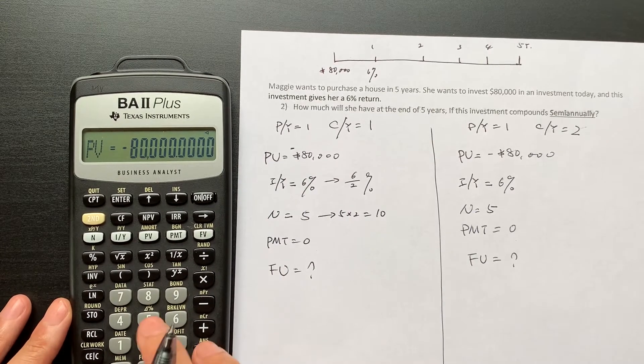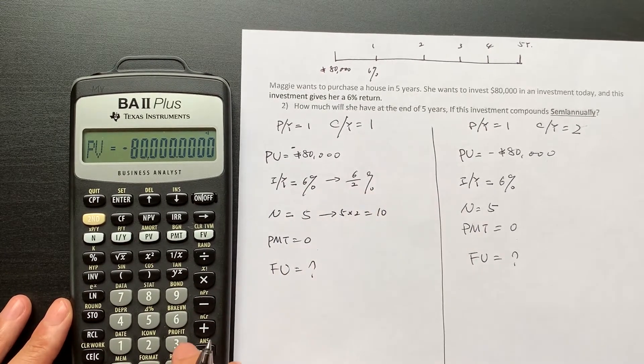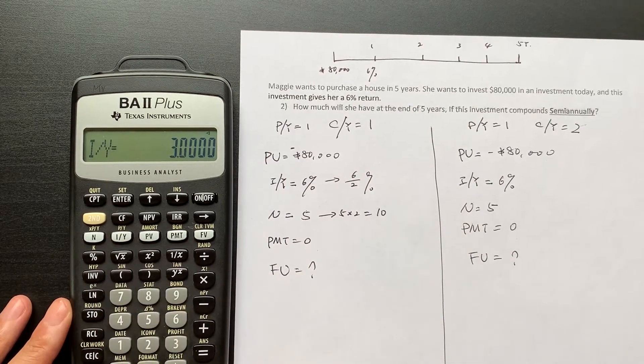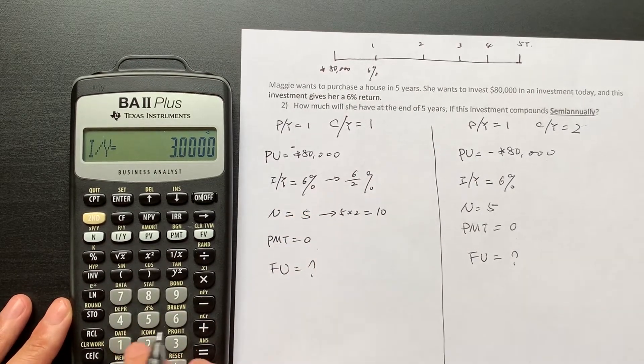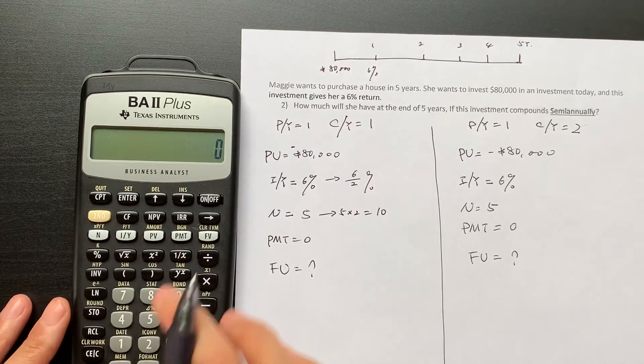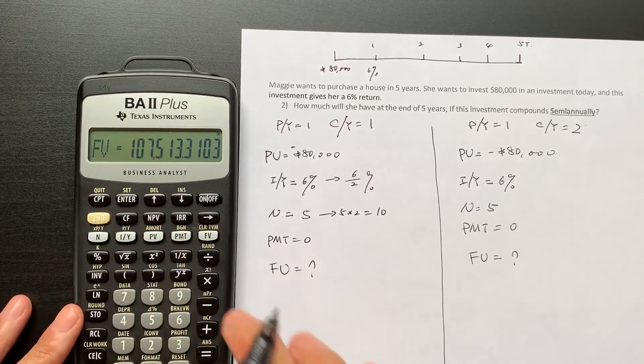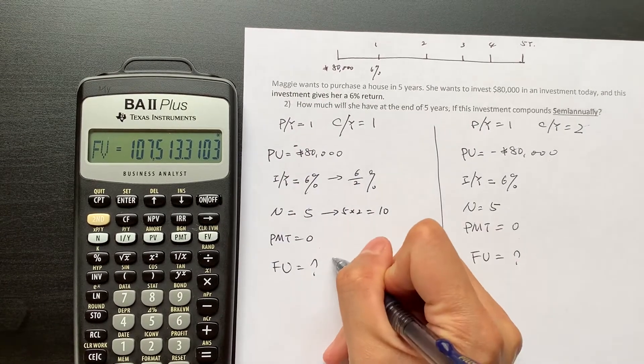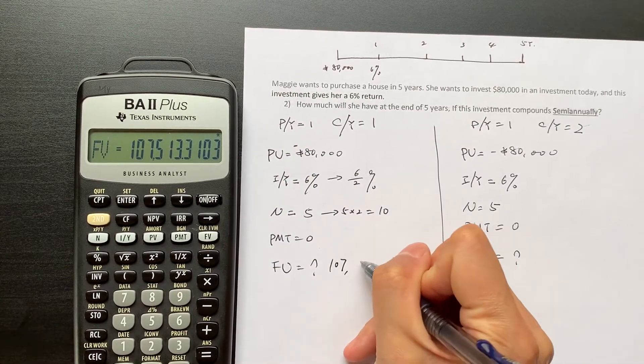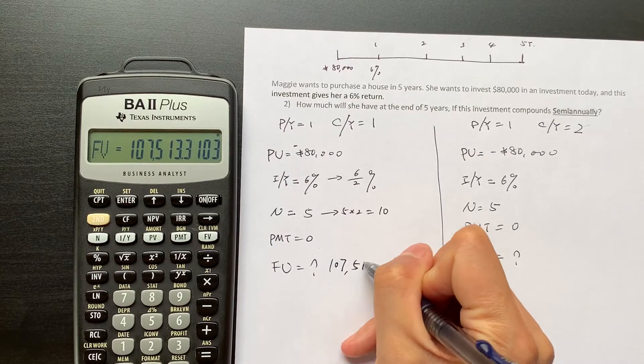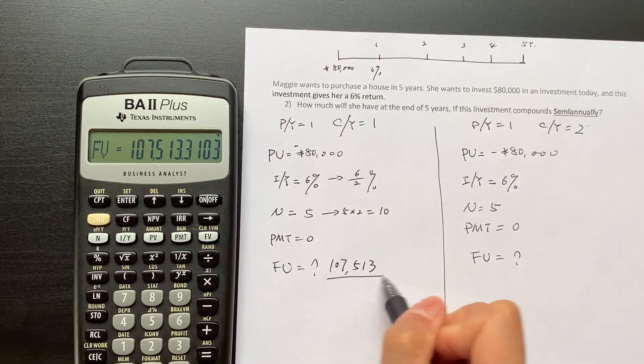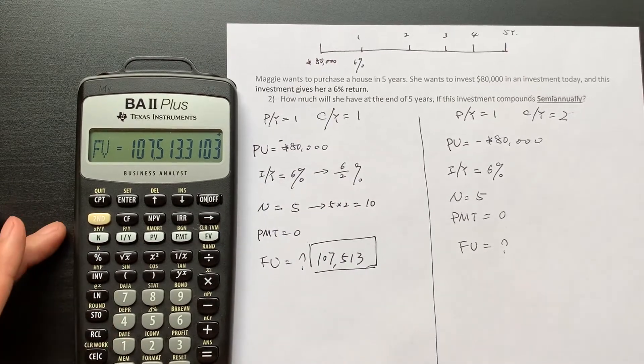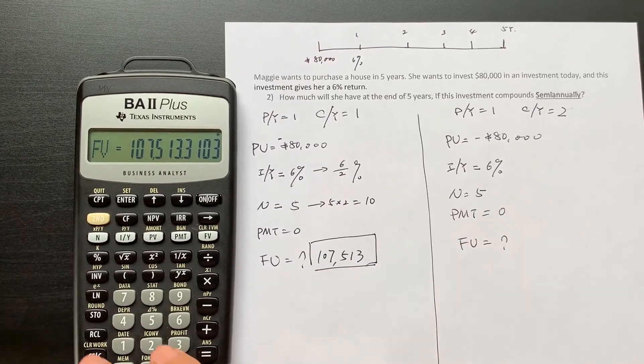Then you have your interest rate is six divided by two is three, three is your interest rate. Then N is equal to ten, then your PMT equals zero. You want to compute the future value. The future value is 107,513. This is your future value.